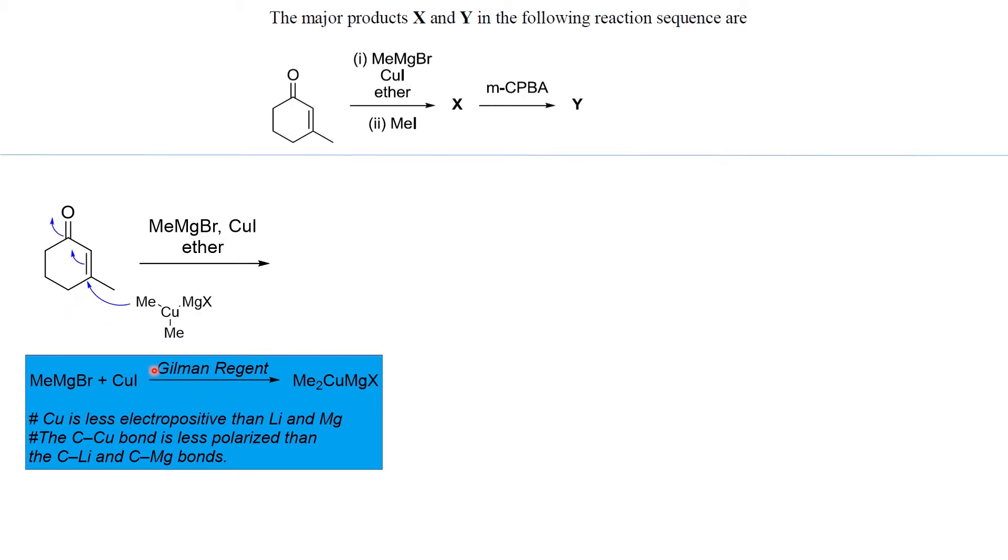These organocupridate species undergo 1,4 addition. So it means the addition of methyl takes place in a conjugate manner. So this addition is also called conjugate addition.